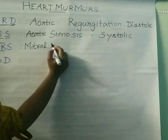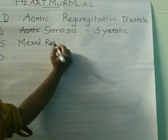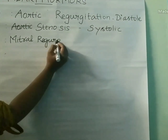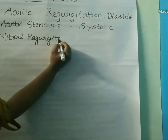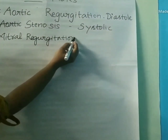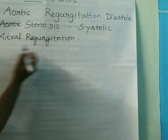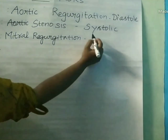Next, MRS stands for aortic regurgitation and the last letter S stands for systolic. So systolic murmur is seen in aortic regurgitation condition.